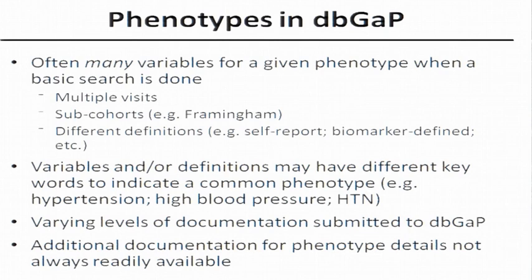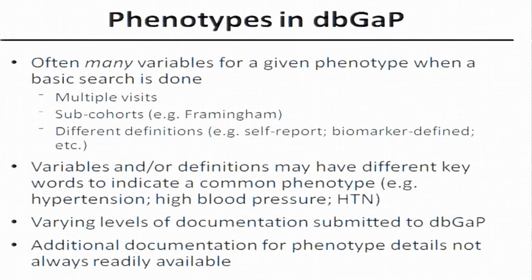There are often many variables for a given phenotype for a given study when a basic search is done in dbGaP. There are lots of reasons for this: multiple visits within a study, sub-cohorts within a study — for example, Framingham — and different definitions will have multiple variables. The variables and definitions may have different keywords; if you search for hypertension, some variables may be under 'high blood pressure,' some may be shortened or partial words. And there are varying levels of documentation submitted to dbGaP, which can vary widely across and within studies.